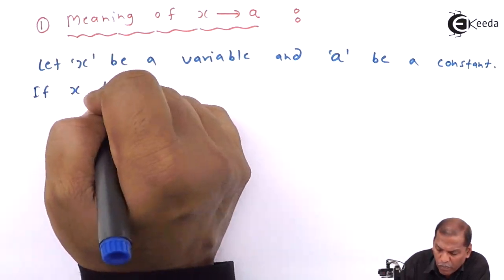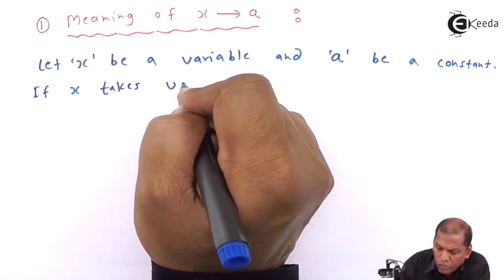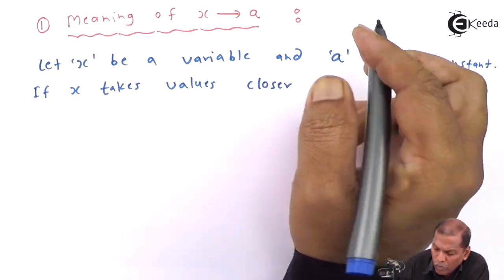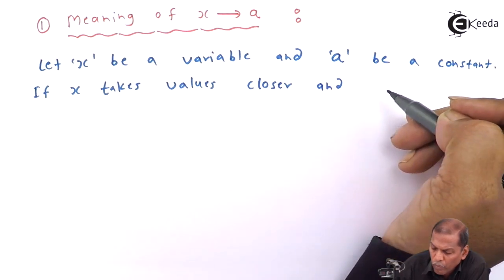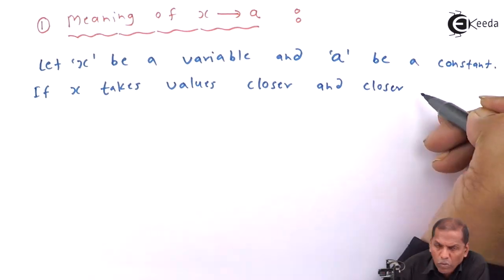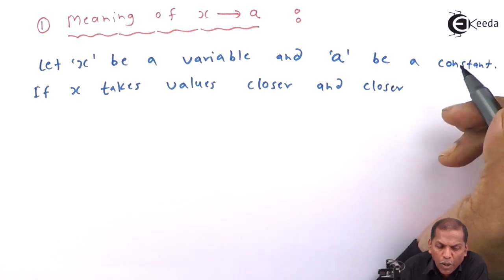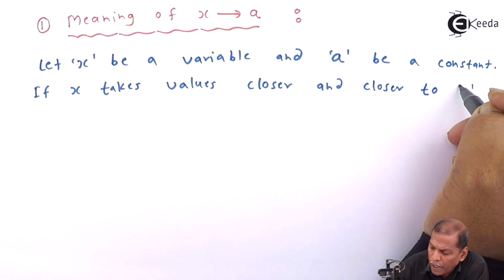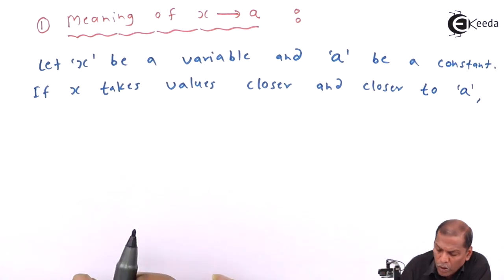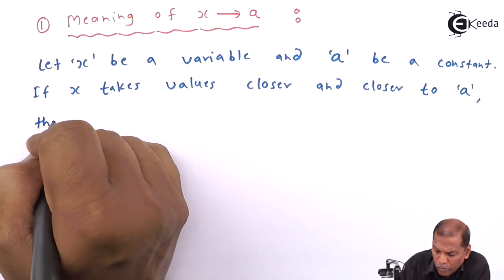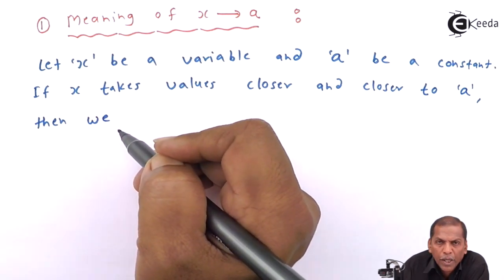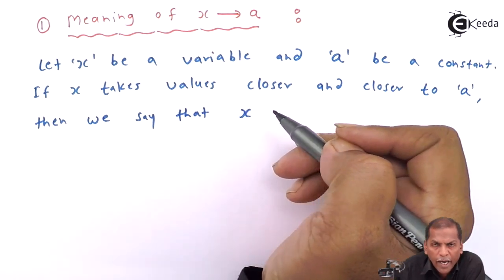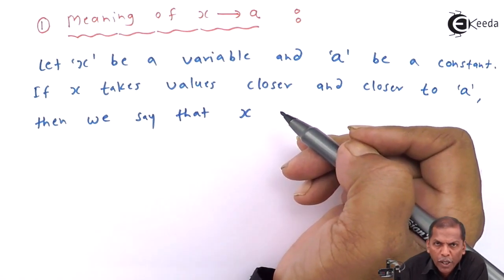If x takes values closer and closer to a, then we say that x approaches to a.